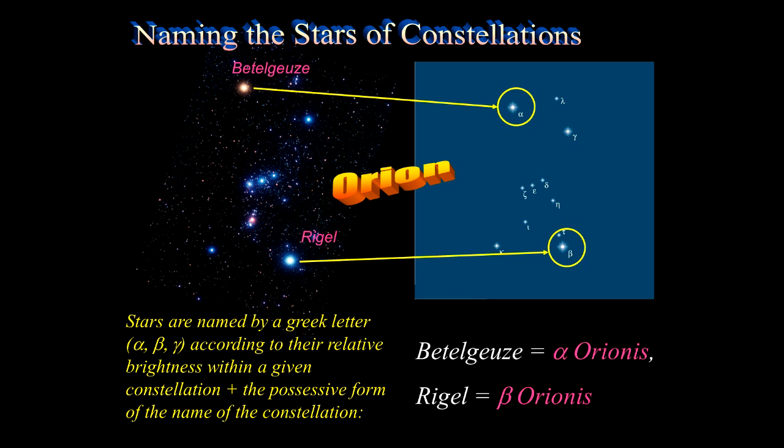...plus the possessive form of the name of the constellation. So we have Betelgeuse is alpha Orionis, Rigel is beta Orionis, etc. So that's the general pattern in the stars of the constellations.